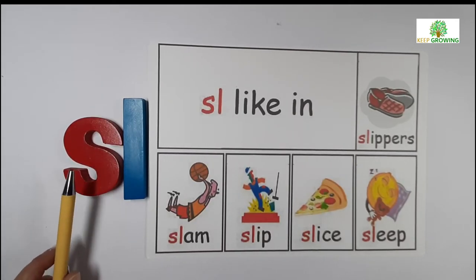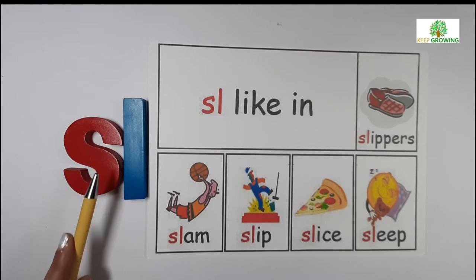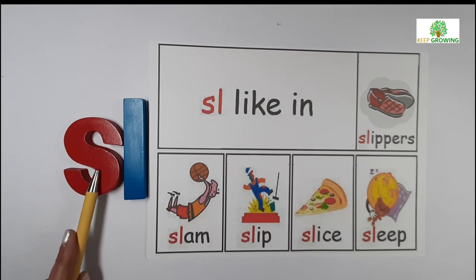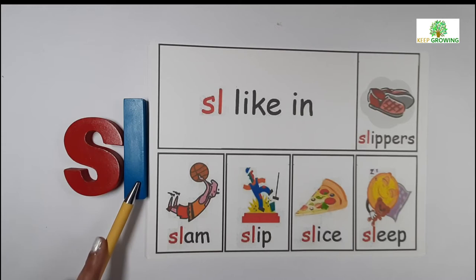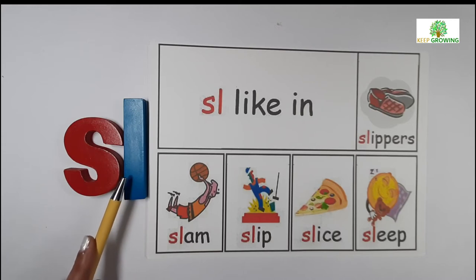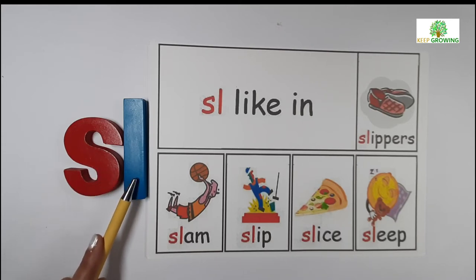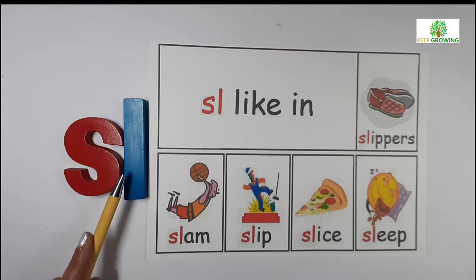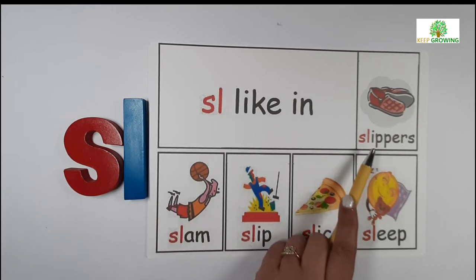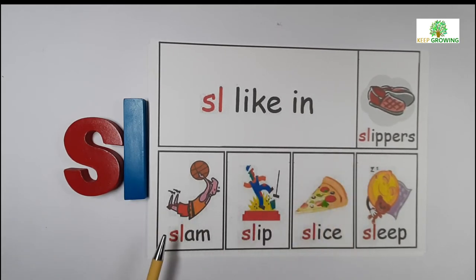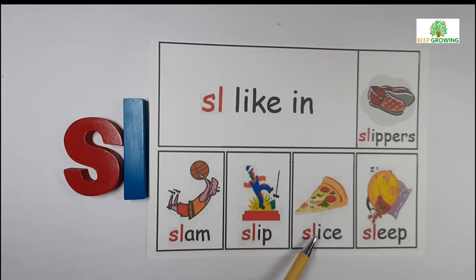Blend of letter S and L. S sounds S and L sounds L. It gives a sound SL. For example: sleepers, slam, slip, slice, sleep.